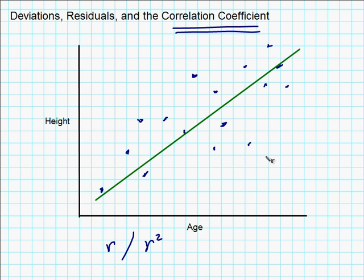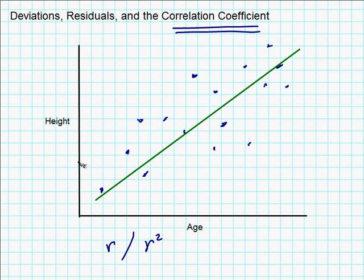The way it works is this: if the data is just totally random, scattered all over the map with no real linear relationship at all, we would say the correlation is zero. If it's just a flat relationship — if the regression line were just a horizontal line — it would also come out zero, because the height in that case would be the same regardless of age. If there is a positive trend, as one variable gets larger the other also gets larger. Or if there's a negative trend, as one thing gets larger the other gets smaller.